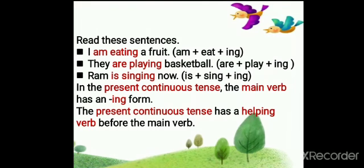In the present continuous tense, the main verb has an -ing form. The present continuous tense has a helping verb before the main verb. As you can see in these sentences: 'am eating.' With 'am,' we are using -ing form of verb.